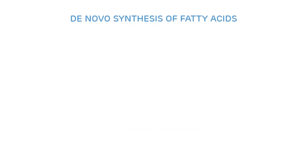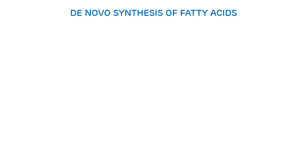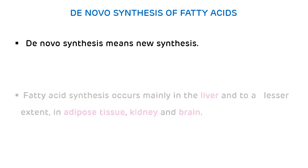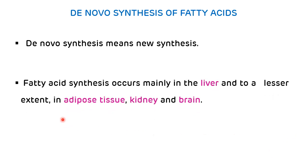De novo means synthesis of new things. The first substrate for the de novo synthesis of fatty acid is acetyl-CoA. These fatty acids are oxidized into acetyl-CoA, so we can say that acetyl-CoA is both the substrate as well as the end product of fatty acids. However, de novo synthesis is not a reversal of beta-oxidation. The major organs carrying out de novo synthesis are the liver, and to a lesser extent, adipose tissue, kidney, and brain.